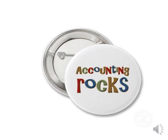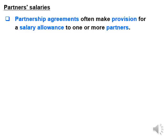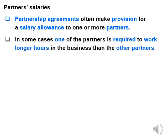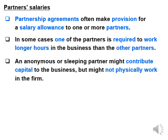We are going to look at other aspects of partnership, starting with partner salaries. Partnership agreements often make provisions for a salary allowance to one or more partners. In some cases, one of the partners is required to work longer hours in the business than other partners. An anonymous or sleeping partner might contribute capital to the business but might not physically work at the business.